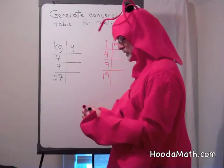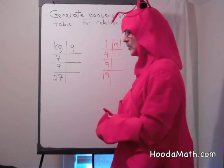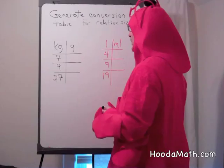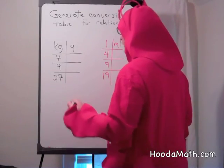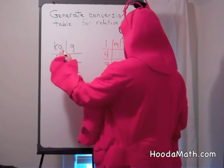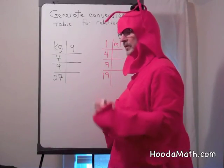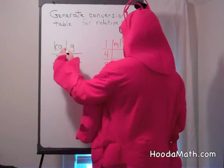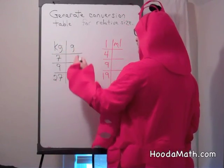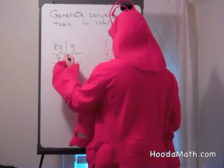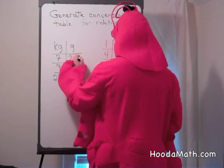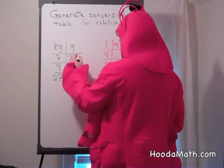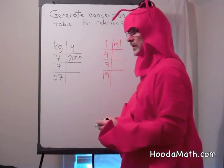Kilogram, which is a measure of mass or weight, you multiply to go from kilograms to grams. Kilo meaning 1,000, so you multiply by 1,000 to change from kilograms to grams. 1,000 times 7 is 7,000. There's 7,000 grams in 7 kilograms.